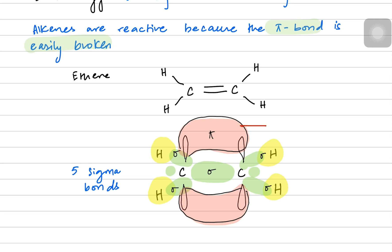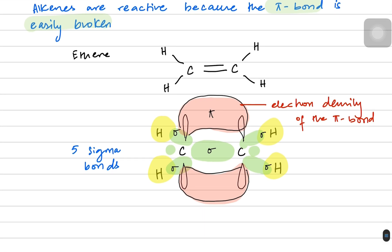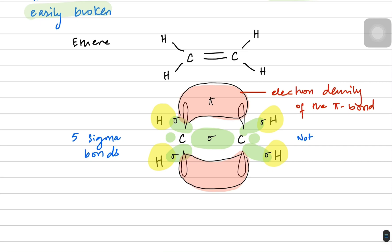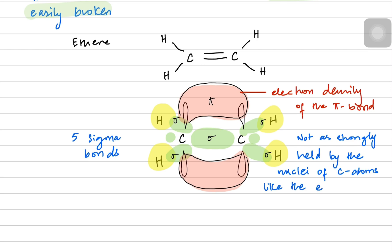The pi bond is an electron-rich region with electron density above and below the internuclear axis. Because it is so spread out, it is not as strongly held by the nuclei of the carbon atoms as the electrons of the sigma bond. So it is easier to break.